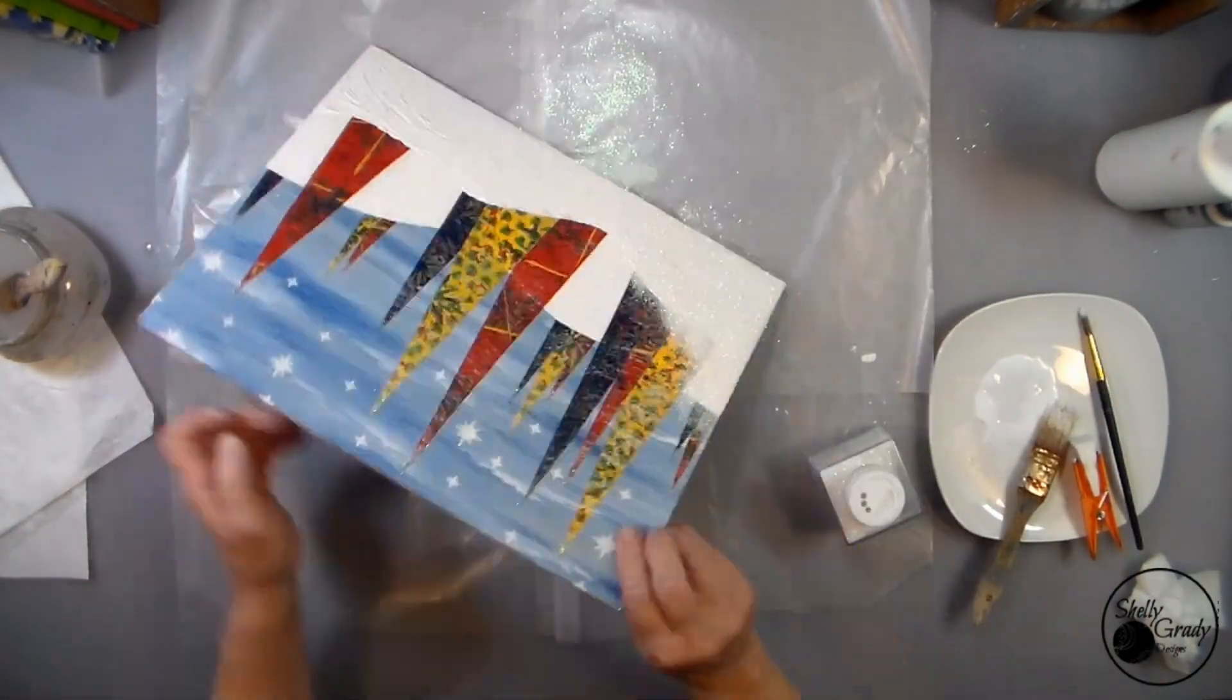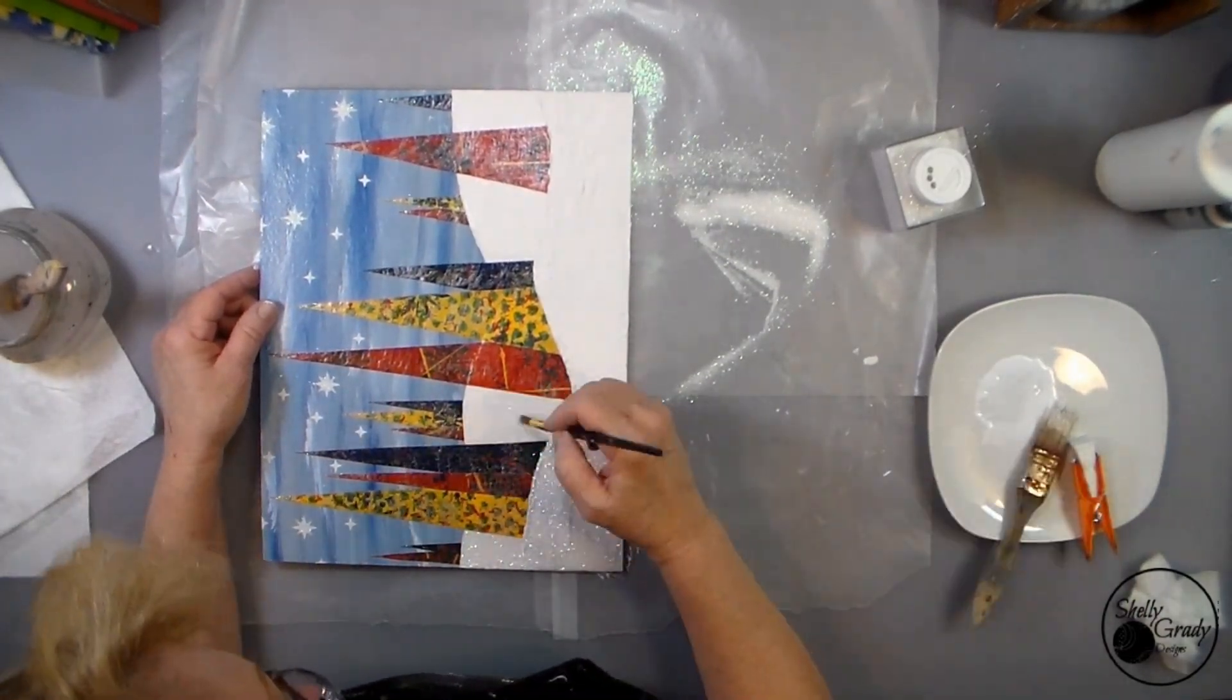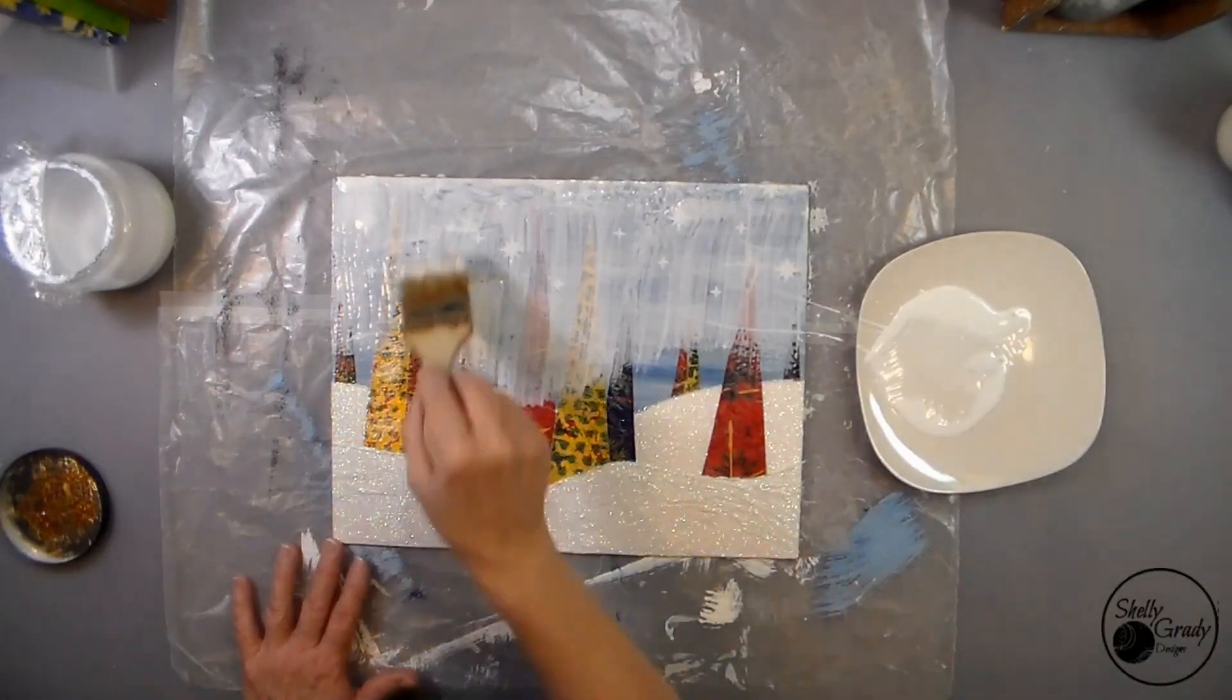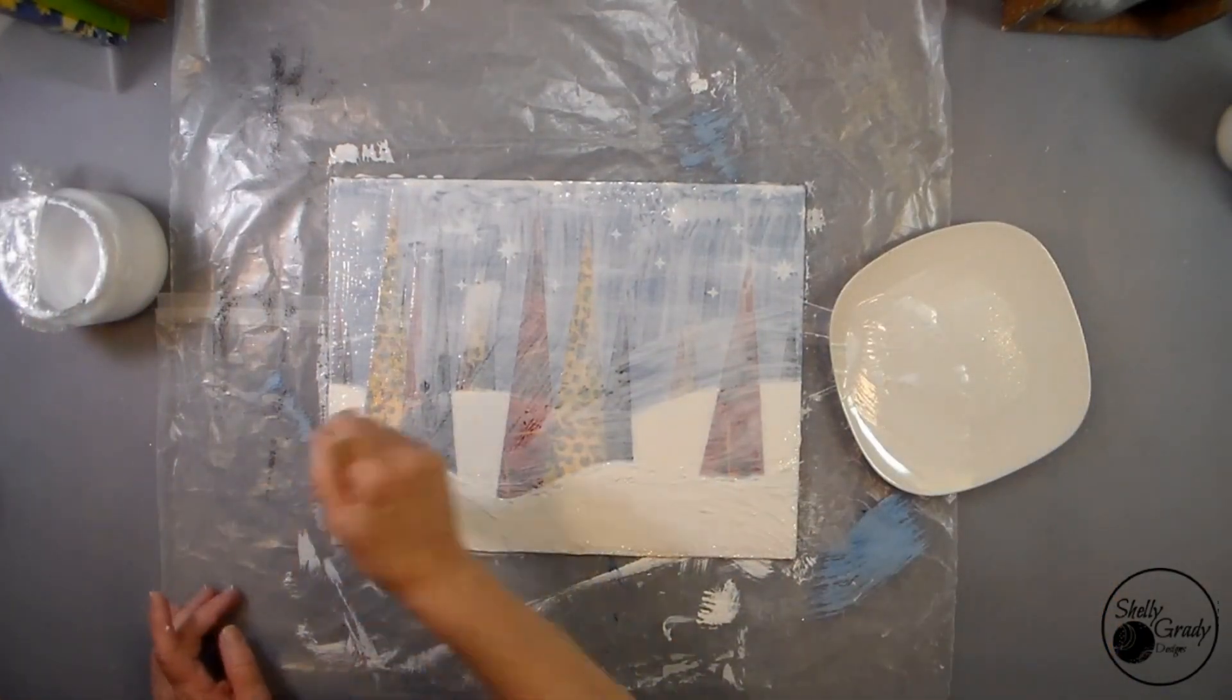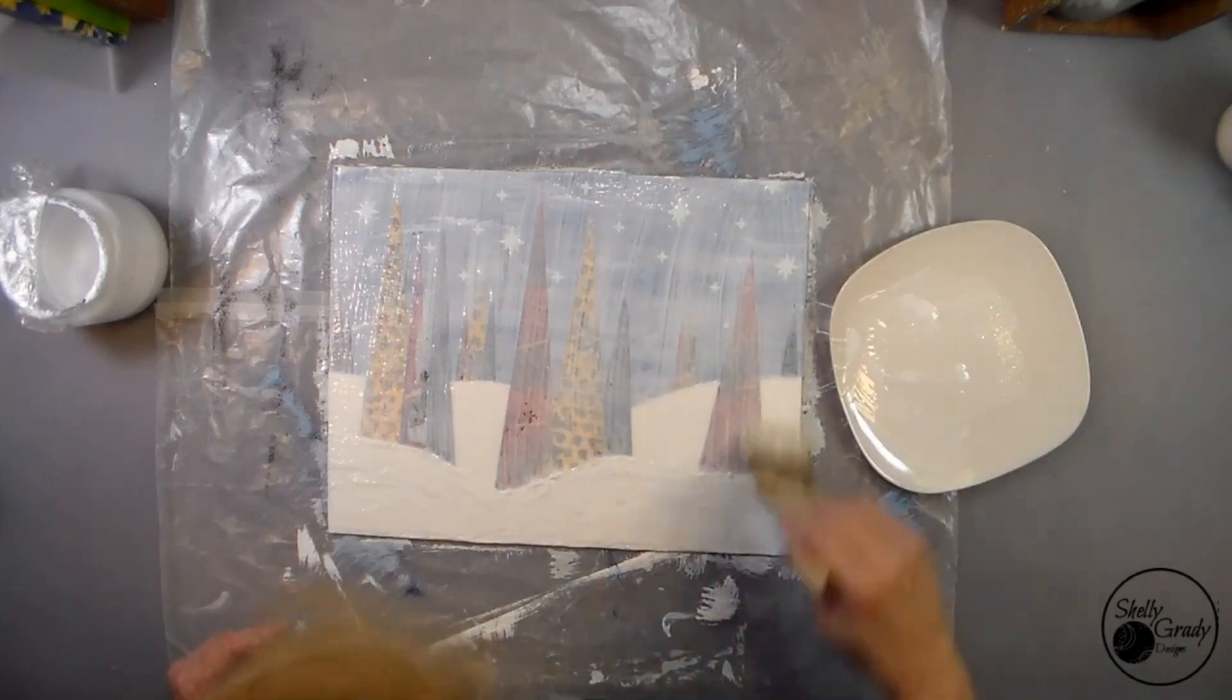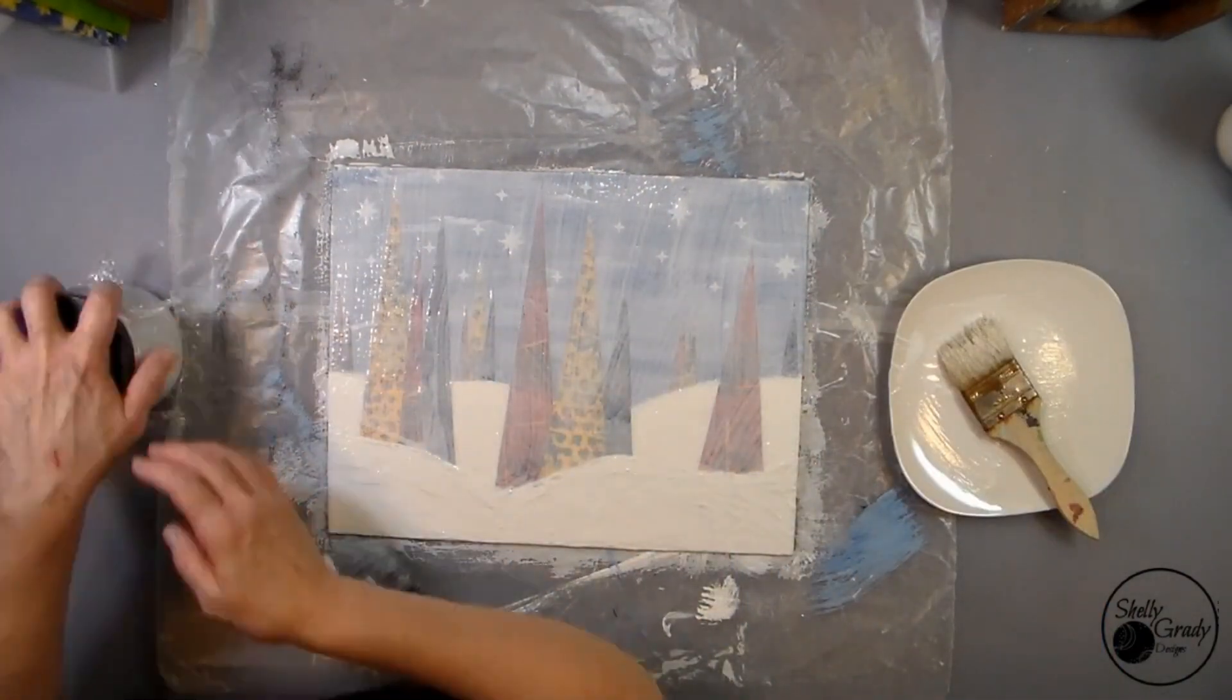Applying some Mod Podge and glitter to my hills. Finishing up with a nice coat of Mod Podge, and then I'll wad up a paper towel and kiss the whole canvas gently just to make sure my texture is all the same and I don't have any brush strokes.